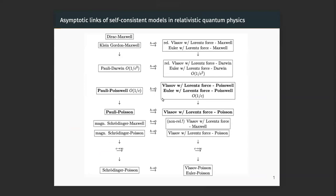I have here a graphic which represents the most important models in this setting. I've been talking about self-consistent models, which means that these models describe self-interaction with the electromagnetic field. Each time you have a charged particle which moves, the movement will create a radiation which will interact with the particle itself again, so you have a nonlinear interaction here.